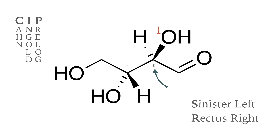The neighbor with the highest atomic number for this carbon is oxygen — it receives priority one. Next we have two carbon atoms as neighbors. They have the same atomic number, so we look at the next atoms. The left carbon atom holds a carbon, oxygen, and a hydrogen as neighbors, and the aldehyde has a hydrogen and a double bond to an oxygen atom. The double bond counts as two oxygen atoms, therefore the right carbon atom gets a higher priority. Hydrogen has the smallest atomic number and always receives the lowest priority.